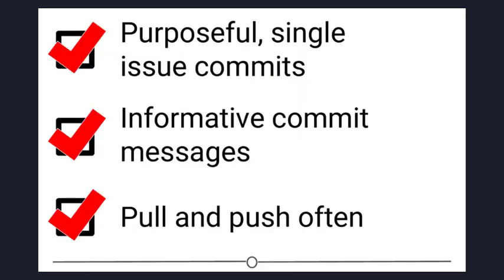It can take some time to get used to working with version control software like Git. But there are a few things to keep in mind to help establish good habits that will help you out in the future. One of those things is to make purposeful commits. Each commit should only address a single issue. This way, if you need to identify when you changed a certain line of code, there is only one place to look to identify the change and you can easily see how to revert the code.